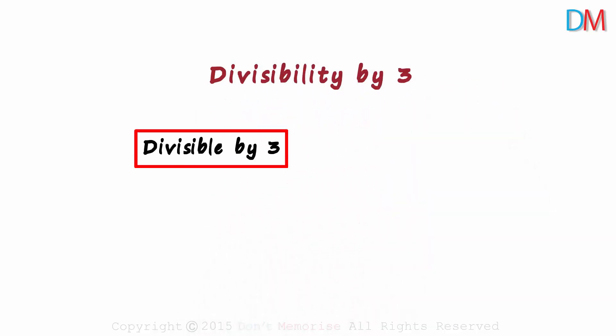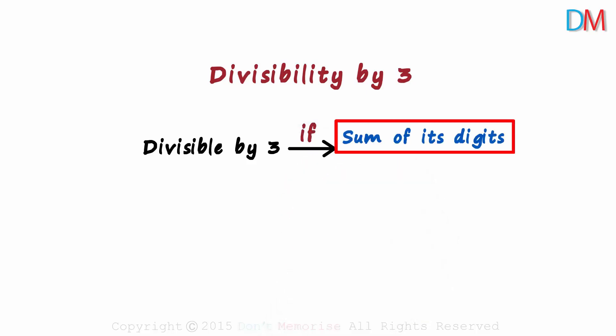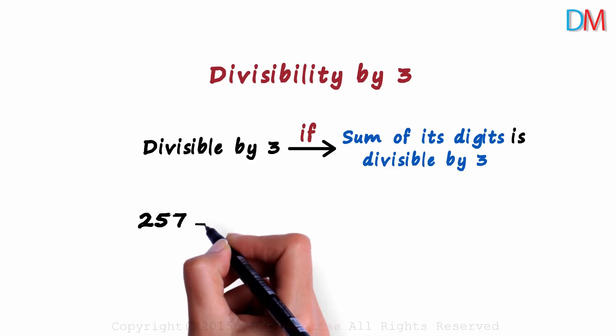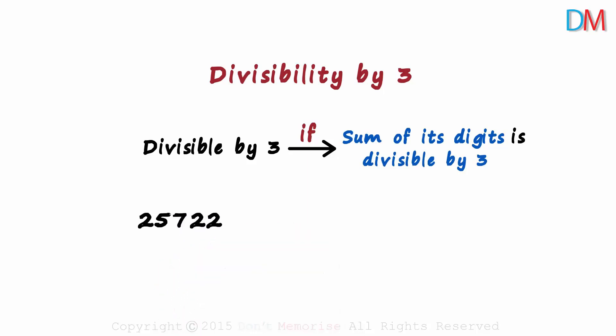A number is divisible by 3 if the sum of its digits is divisible by 3. Is 25,722 divisible by 3?